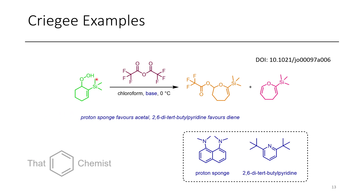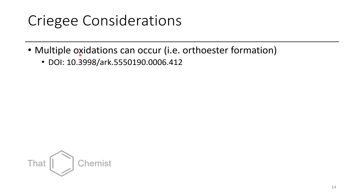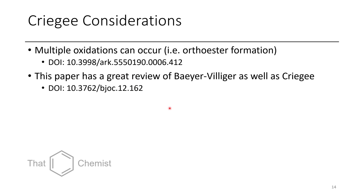Another example shows activation of a hydroperoxide tolerating TMS groups, tributyltin groups, and other functional groups. The choice of base allowed selectivity for the acetal versus the diene product. Proton sponge — think of a dimethylaniline whose nitrogen geometry makes it an extremely strong base — was used in one case, while di-tert-butylpyridine favored the other product. A consideration is that multiple oxidations can occur, producing further oxidized products like ortho-esters. There's also an excellent Beilstein Journal of Organic Chemistry review covering Baeyer-Villiger and the Cragi rearrangement worth reading.